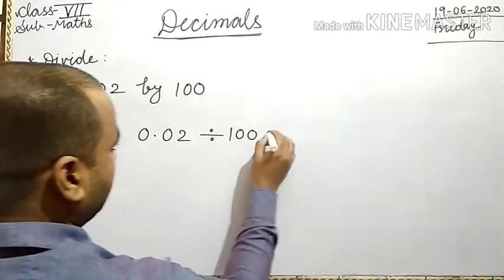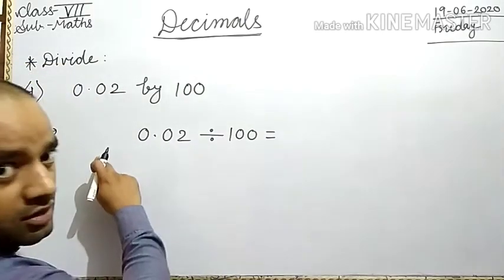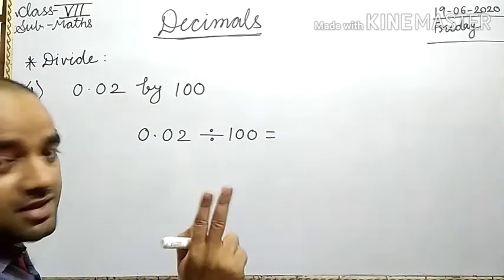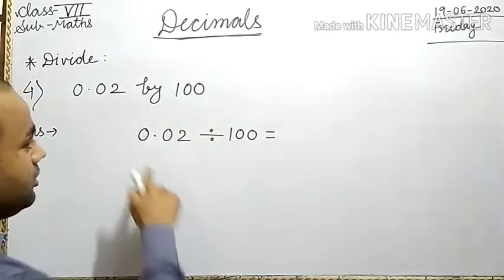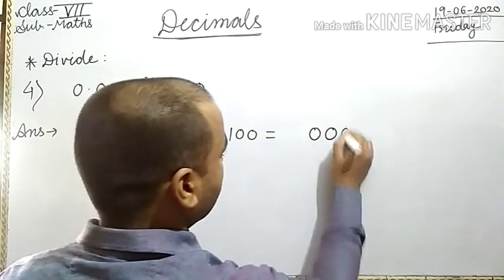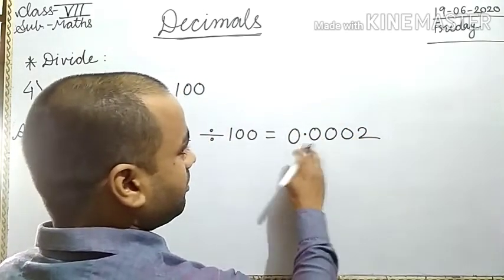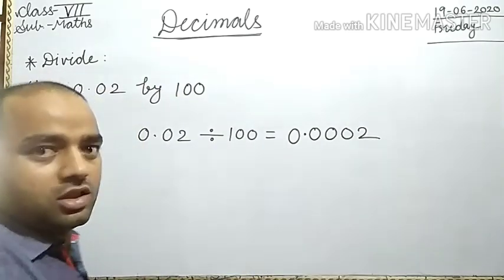Shift the decimal point to the left by two places. When divided by 100, two places means 0.0002.